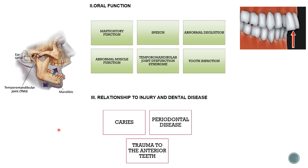The second consequence is oral function. Oral function can be affected by malocclusion in six ways: masticatory function, speech, abnormal deglutition, abnormal muscle function, temporomandibular joint dysfunction syndrome, and tooth impaction. Regarding masticatory function — as shown in this picture, the person has an anterior open bite with increased overjet, meaning the front teeth are more proclined.